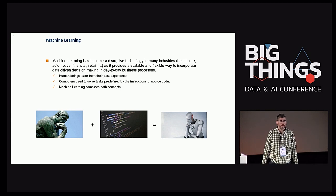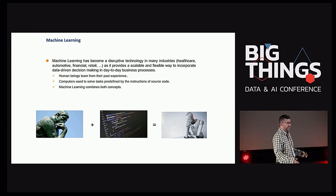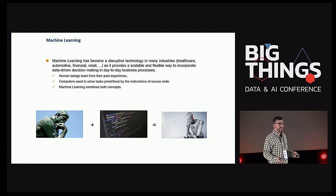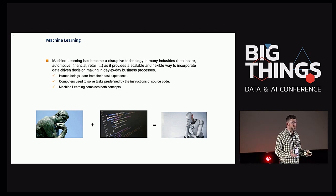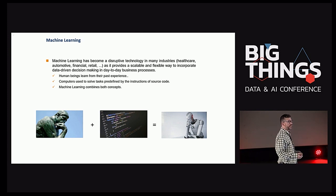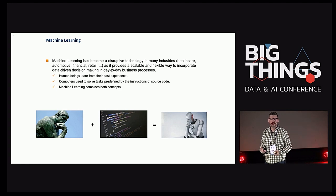I suppose most of you are familiar with the term machine learning. It's a very disruptive technology and it combines two different concepts. On the one side, humans learn from their past experience. On the other side, computers solve tasks following the instructions in their source code. Machine learning combines these, and starting from a dataset composed of historical records, we can create predictive models that learn the rules to solve a specific task.